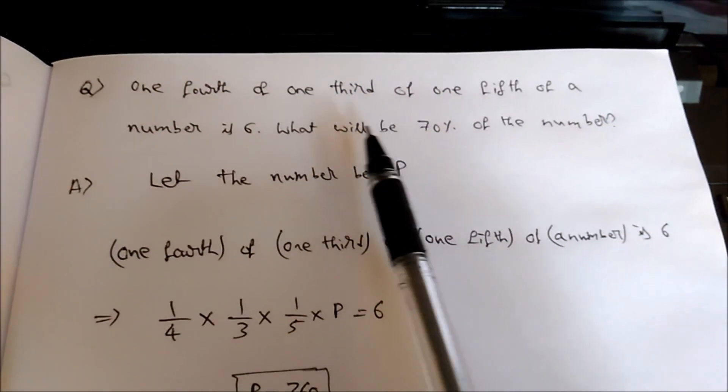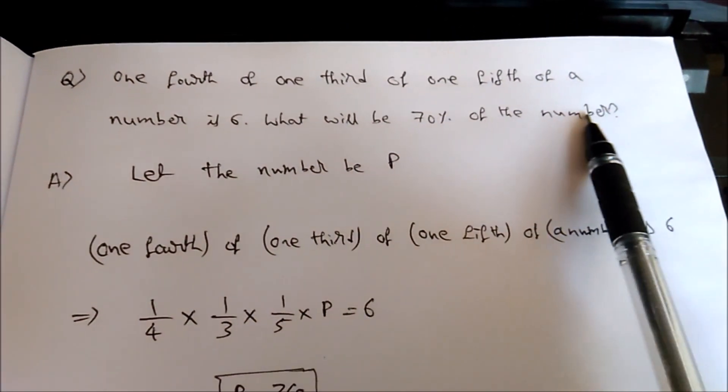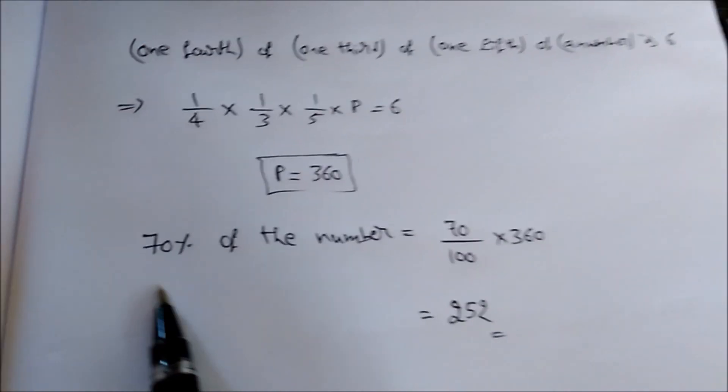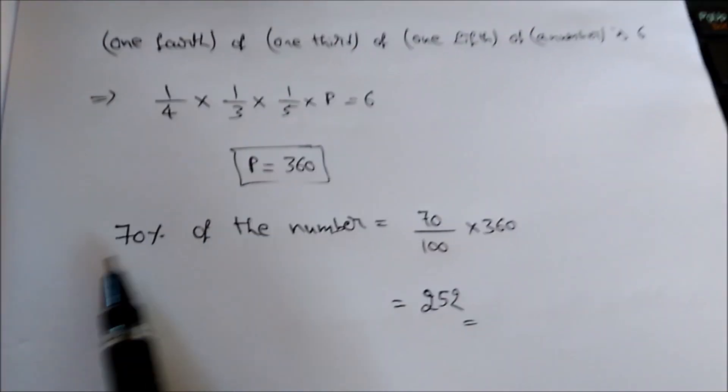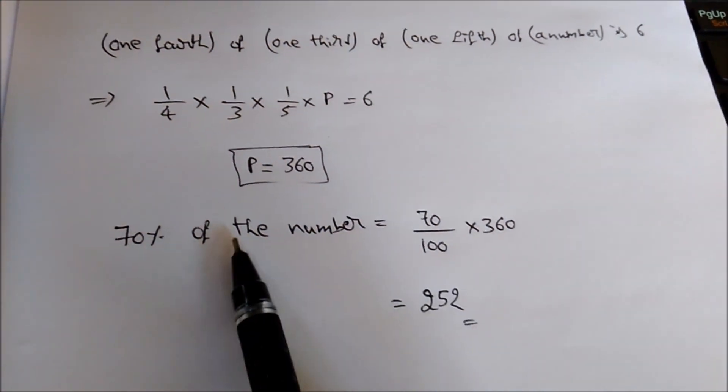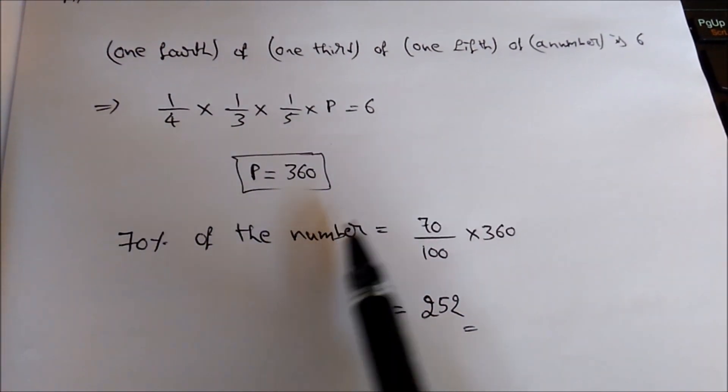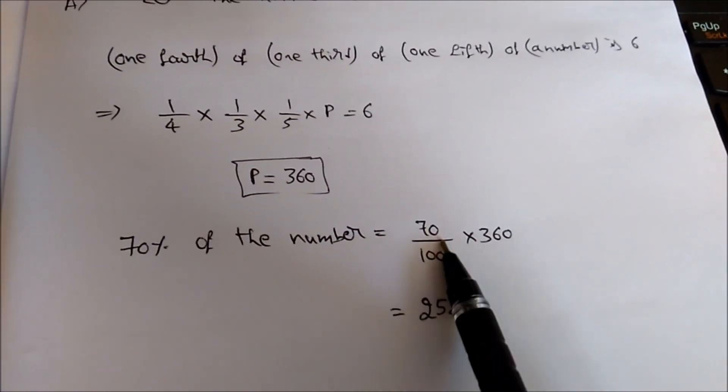Now we need to find out 70 percent of the number. So 70 percent of the number equals—70 percent means 70 by 100. 'Of' means multiply. The number is 360, so 70 by 100 into 360.